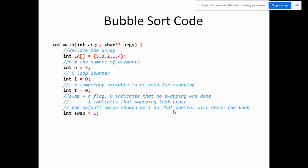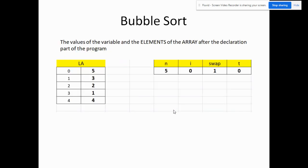The default value of swap should be 1 so that control will enter the loop. Let's examine the contents of the variables. Here is the array with its elements and indices. So we have n equal to 5, i equal to 0, swap equal to 1, and t equal to 0. These are the contents of the variables in memory after the declaration.